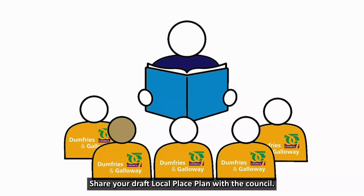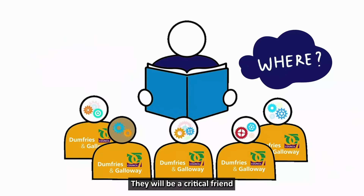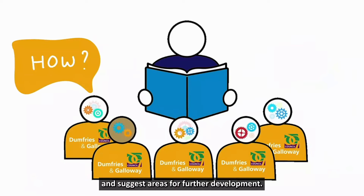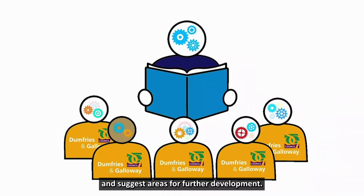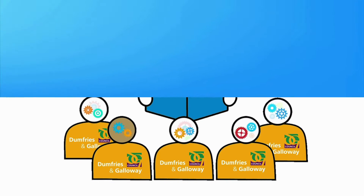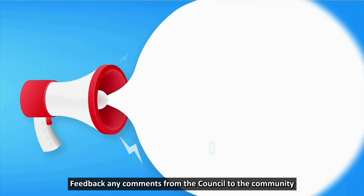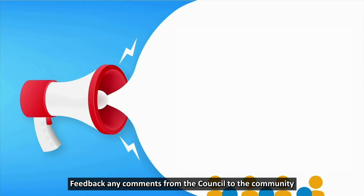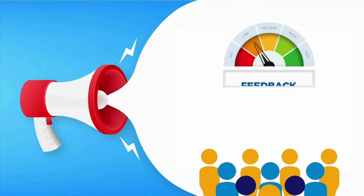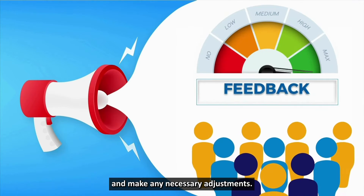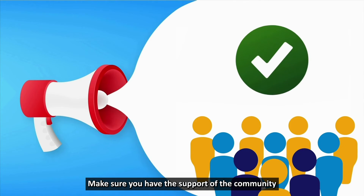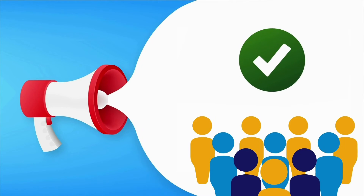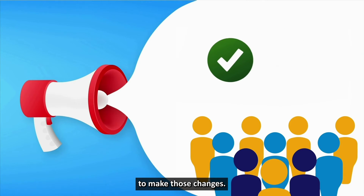Share your draft Local Place Plan with the Council. They will be a critical friend and suggest areas for further development. Feedback any comments from the Council to the community and make any necessary adjustments. Make sure you have the support of the community to make those changes.